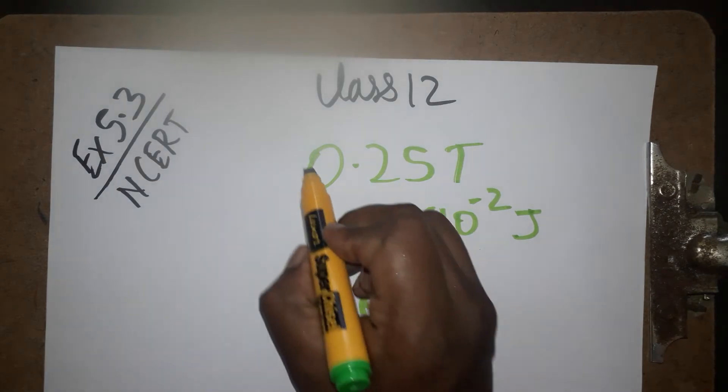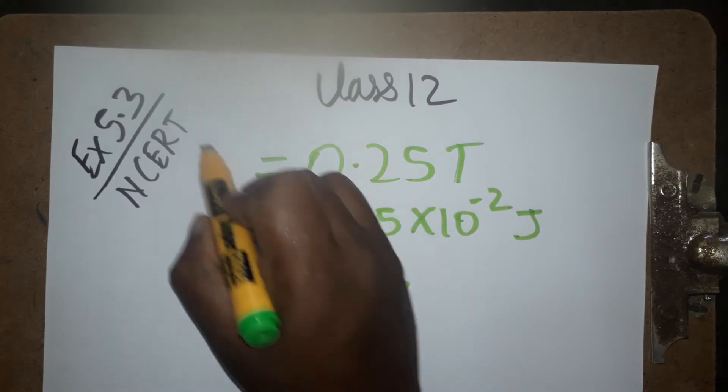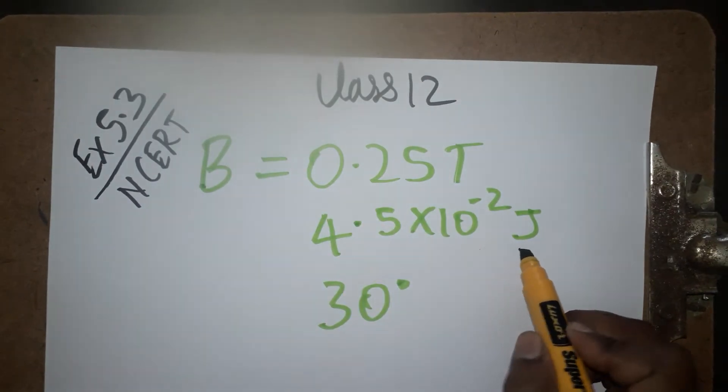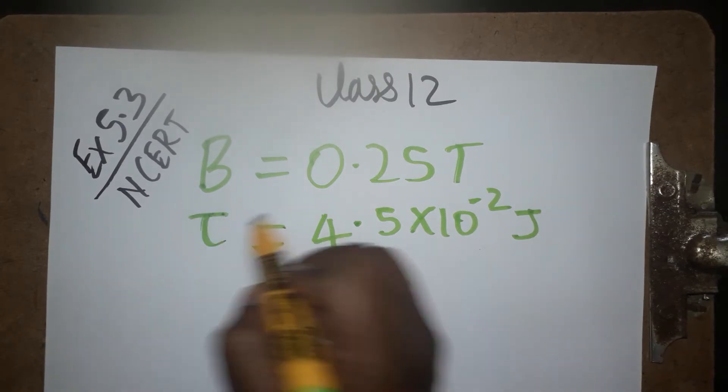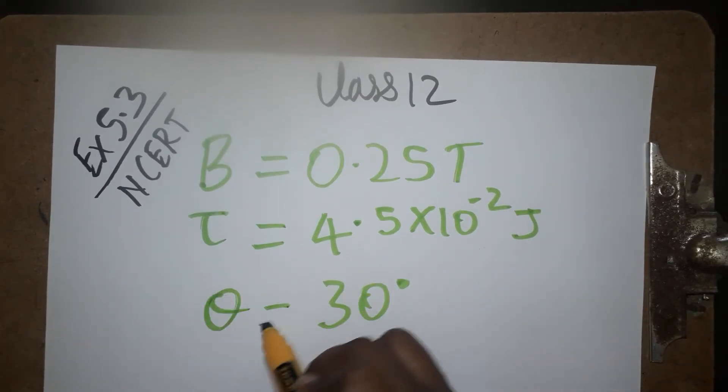First we'll see what is given. 0.25 tesla means it is a magnetic field B. Joules can be energy or torque unit, so this is going to be the torque τ, and theta is 30 degrees.